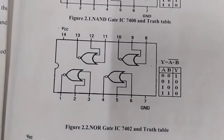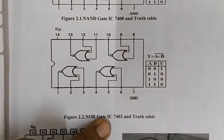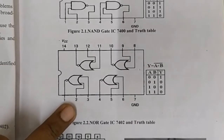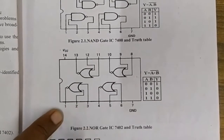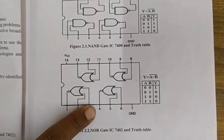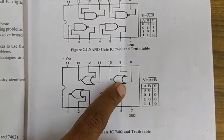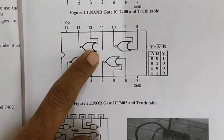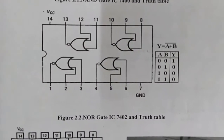Now let's test the working of the NOR gate. This is the internal diagram of NOR gate IC number 7402 — again a 14-pin IC. Pin number 7 is ground and pin number 14 is VCC. Unlike IC 7400, here pins 2 and 3 are input pins and output is obtained at pin number 1. Pins 5 and 6 are inputs of the second NOR gate with output at pin 4. Pins 8 and 9 are inputs of the third NOR gate with output at pin 10.